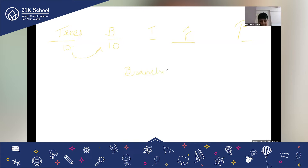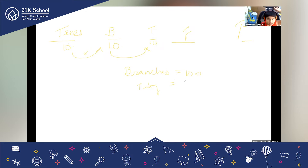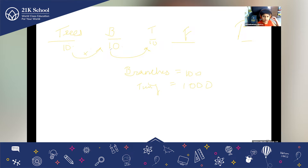A hundred — very good. So we got this by multiplying 10 into 10. After that, the number of branches in each tree are 10. The total number of twigs would be 10 into 10 into 10, which gives a total number of twigs of one thousand. 10 into 10 gives me a hundred, hundred into 10 gives me a thousand.